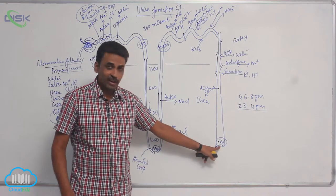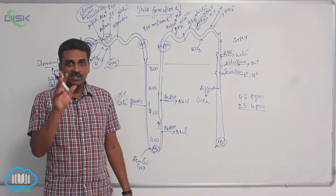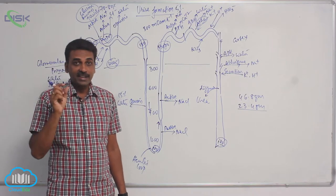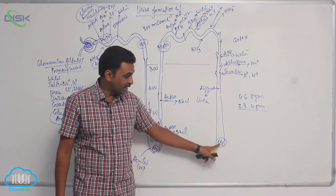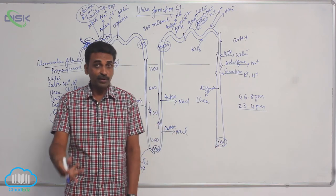The final urine formed has a concentration four times higher when compared to our blood plasma, but it is equal in concentration to medullary fluid.